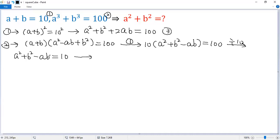From there we can solve ab. So a times b equals, move 10 to the left side, so we get a squared plus b squared minus 10. We denote that as condition 4.